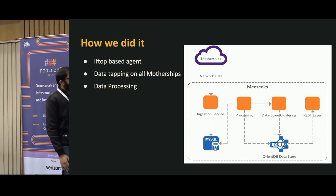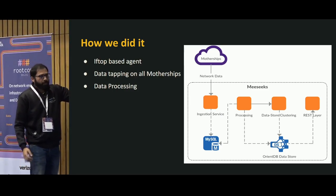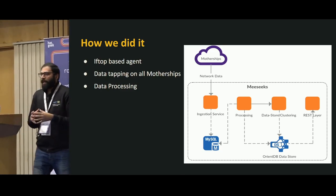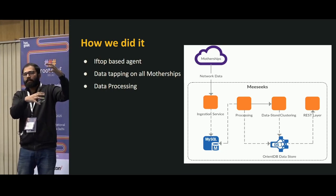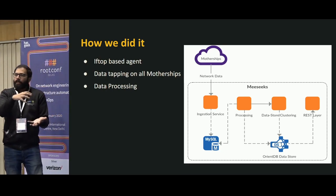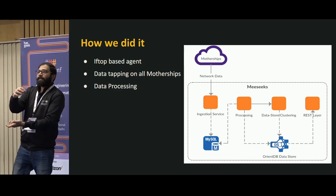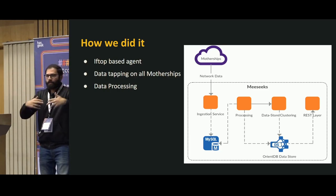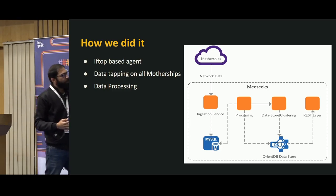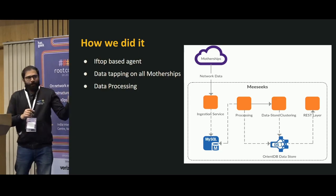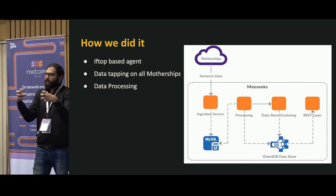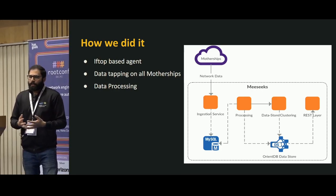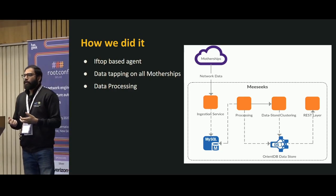Once the raw data is ingested into MySQL, a processing layer starts pulling and processing it — stitching information together. Stitching means starting from source and destination sockets at the VM level, going up to service-to-service mapping and then application-to-application mapping, building it bottom-up. Once done, we store these connections — this graph of dependencies between nodes — in a graph model database, which is OrientDB. We're using the community edition of OrientDB, which does the job. Then there's a REST layer through which you can run any graph query you can imagine.